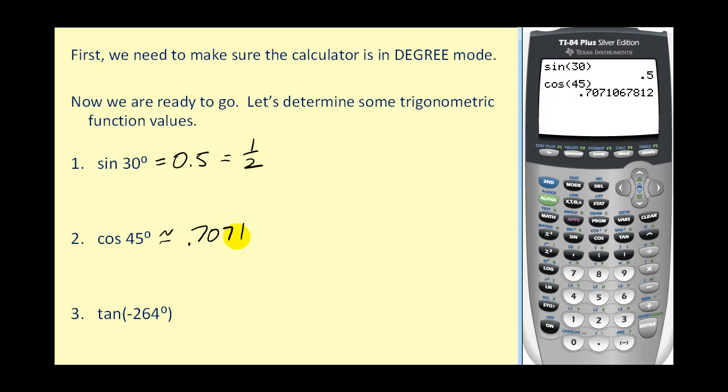And the same procedure for the tangent of negative 264 degrees. There is a tangent key. So I press tangent, negative 264, press enter. And we can see that it's approximately negative 9.5144.